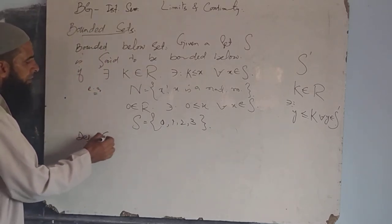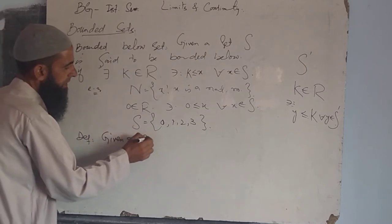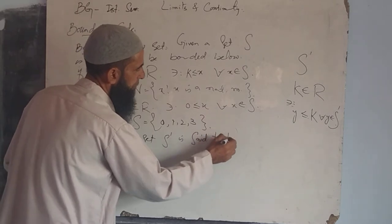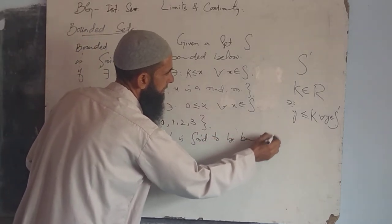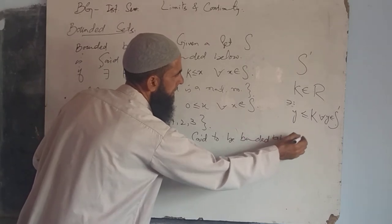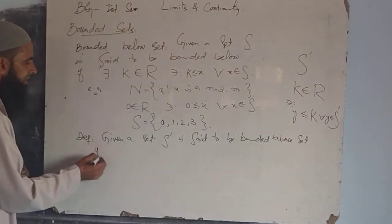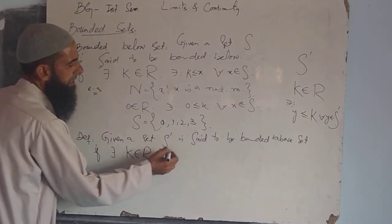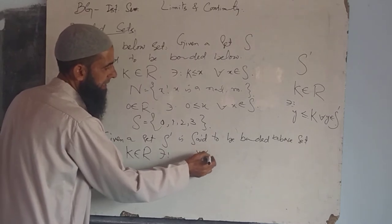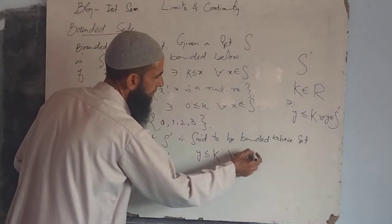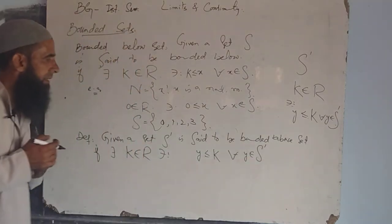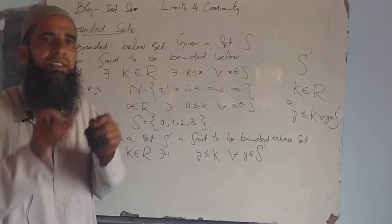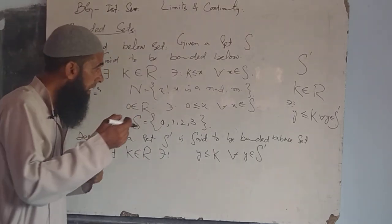Definition: Given a set S' is said to be bounded above if there exists K in R such that Y is less or equal to K for all Y belonging to S'. When we have this condition satisfied, we say that particular set is a bounded above set.